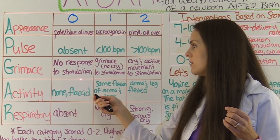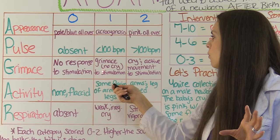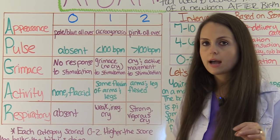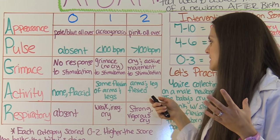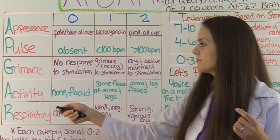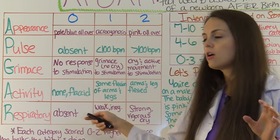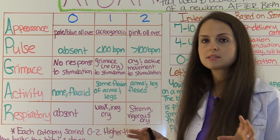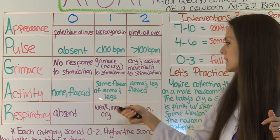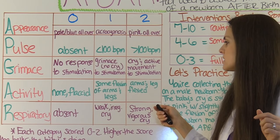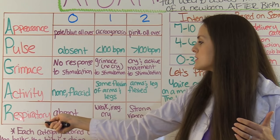For grimace, you give a zero if there was no response to stimulation at all — you stimulate the infant and it doesn't do anything. Give a one if there was a grimace but no cry to stimulation. Give a two if the infant cried and had active movement while being stimulated. For activity, you give a zero if the baby doesn't move at all and is flaccid and limp. Give a one if there was some flexion of the arms and legs, and a two if the arms and legs were flexed and return to flexion when extended.